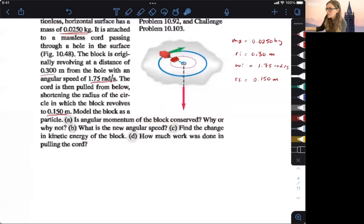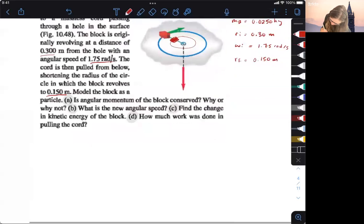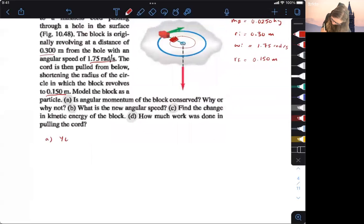So what is the new angular speed here? So we have, okay, so first a, yes. And then for B, we basically have all of our pieces.